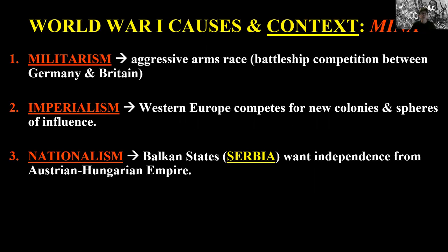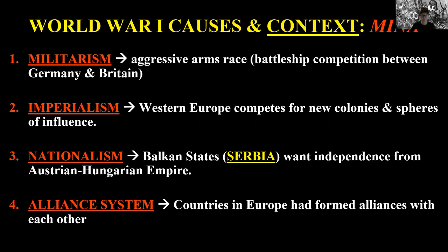Nationalism — I pledge allegiance. You're going to have different areas wanting to break free from the empires, such as Serbia and the Balkan states wanting to break free of the Austro-Hungarian Empire. And finally, the alliance system. Countries in Europe had formed alliances with each other, meaning that if your ally is attacked, you are obligated to back them up. That's how a small war goes to a global war.